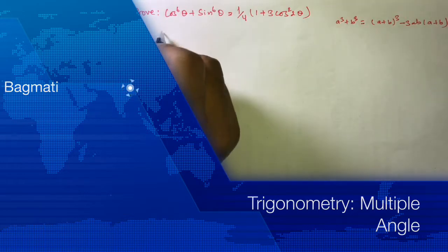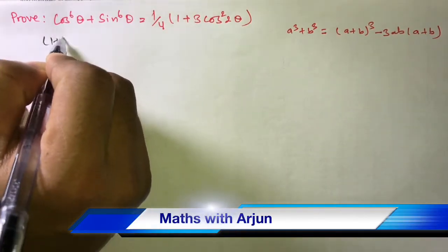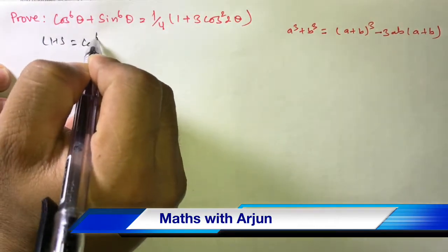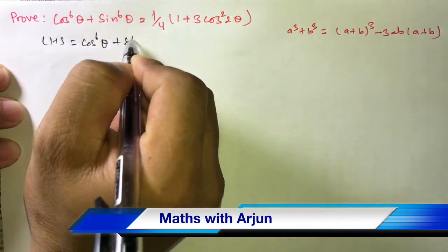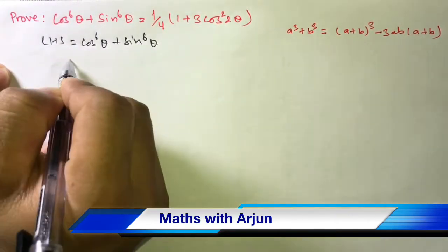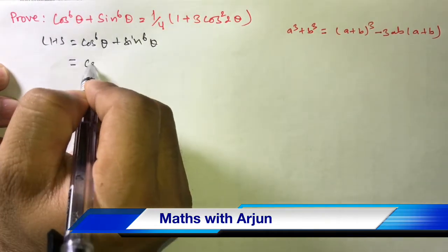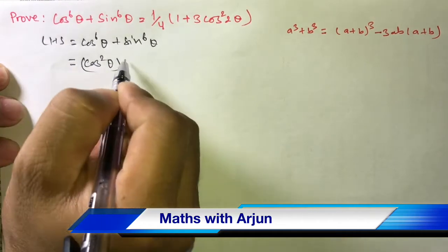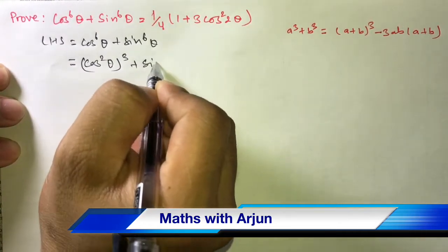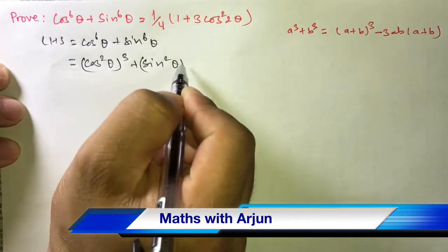Let's start from LHS. Here LHS equals cos⁶θ + sin⁶θ. We can change it into a³ + b³ form like this: (cos²θ)³ + (sin²θ)³.